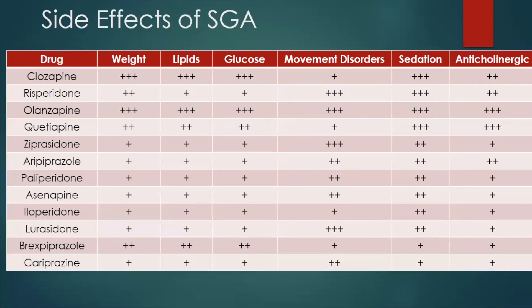There is tremendous variability within the second generation class. Comparing adverse effects: movement disorders are rated less than 15% for 1+, 15–30% for 2+, and over 30% for 3+. Even if a medication doesn't commonly cause a side effect, it still can — especially weight gain, which can be a very robust response in some patients. This is an area of intense research, particularly looking at pharmacogenomic profiles to identify which patients are at highest risk.